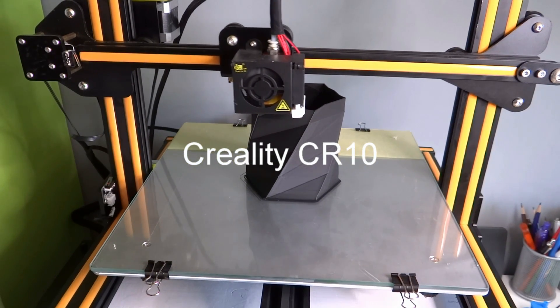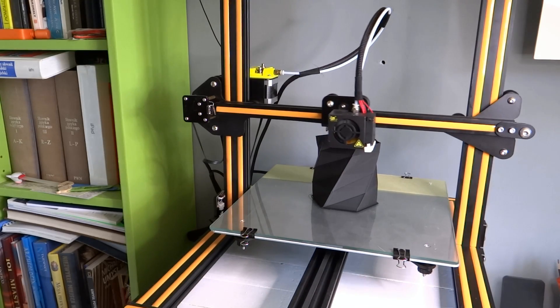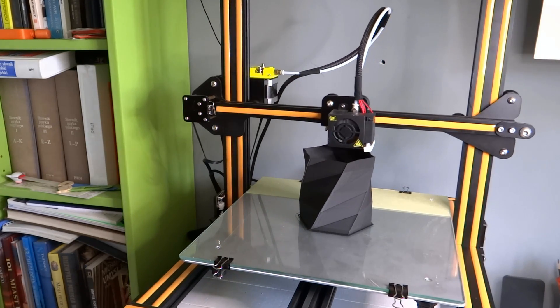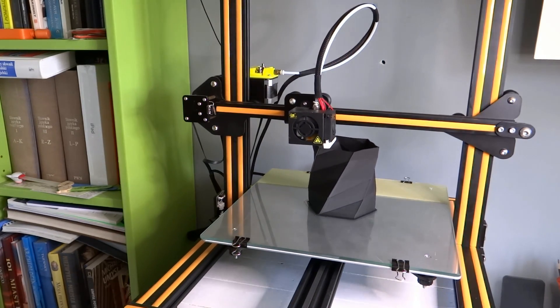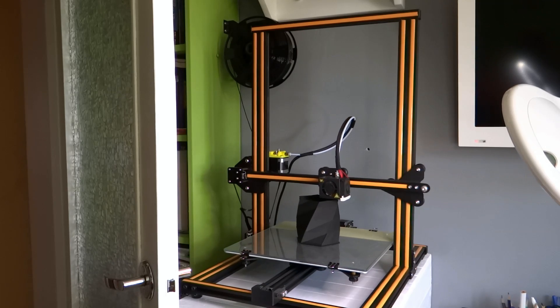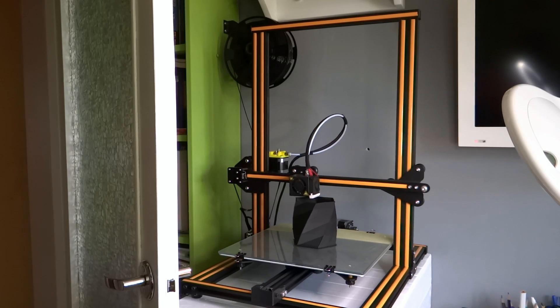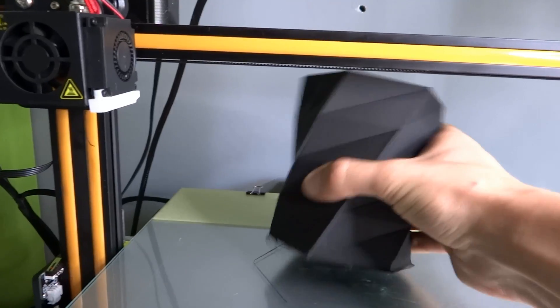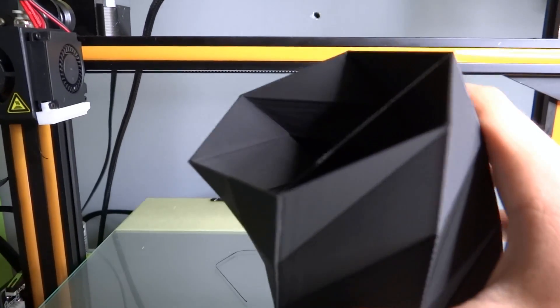That's Creality CR10, the super cheap and big 3D printer. Build area is 30 by 30 by 40 centimeters, so it can print really big objects. It has a heated bed, big graphic display and it is very easy to assemble. You can do it in less than 30 minutes.